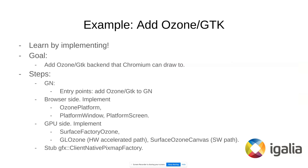So the example is Ozone GDK — we are going to learn by implementing it. Our goal is to add an Ozone GDK backend that Chromium can basically draw into. I've chosen the software path instead of the hardware-accelerated one because I found it quicker to implement, but nothing limits you from implementing the hardware one.